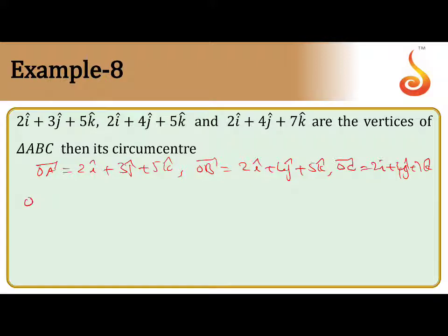First find AB vector. AB vector is OB minus OA. So OB means 2i plus 4j plus 5k minus OA minus 2i minus 3j minus 5k. This will give 5k and 5k cancel, 2i and 2i cancel. So you will get j cap.